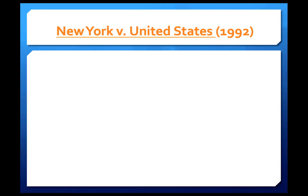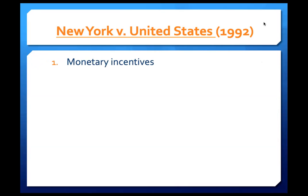The first part relied on monetary incentives: states receiving waste could collect surcharges on waste from other states. The federal government put these surcharges in an escrow account, and other states that achieved certain milestones in developing disposal sites could receive a portion of the fund. This part of the law was held to be constitutional under Congress's powers to tax and spend — the court said there was nothing unusual about this use of congressional power.